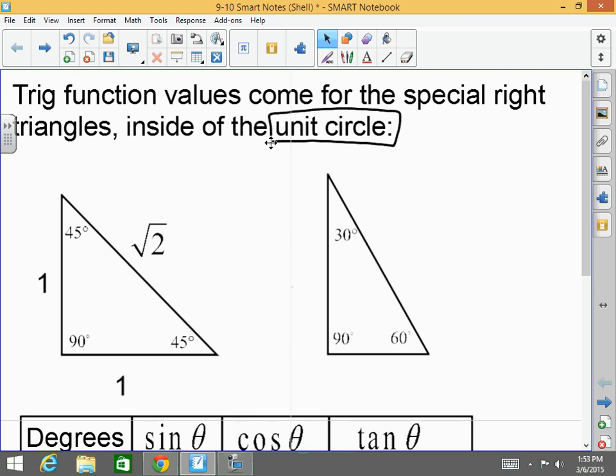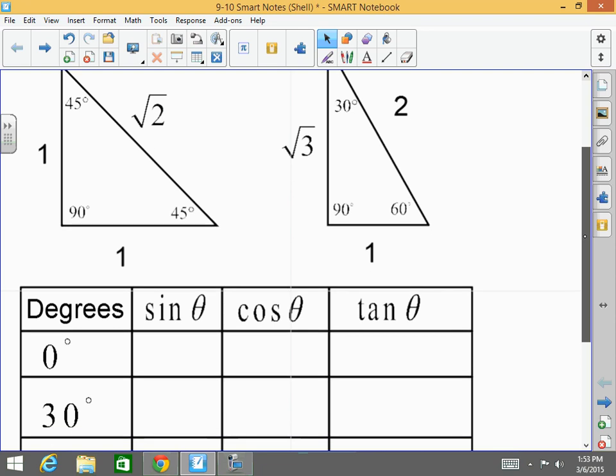For a 30-60-90, the side across the 30 is 1. The side across the 60 is 1 times square root of 3, which is square root of 3. And the hypotenuse is 1 times 2, which is 2. From here, we can derive the following table that's right below it.